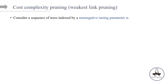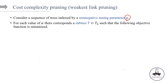So what is the cost complexity pruning method? We also call it weakest link pruning. This is a technique used to deal with overfitting. It reduces the size of a decision tree by removing sections of the tree that are considered the weakest link — those sections that provide little predictive or classification power. To understand that, let's consider a sequence of trees indexed by a non-negative tuning parameter alpha. For each value of alpha, there's going to be a corresponding subtree.